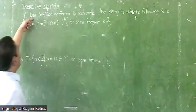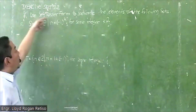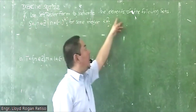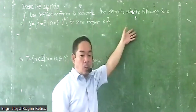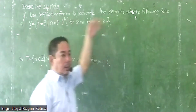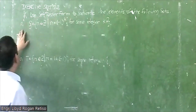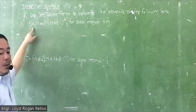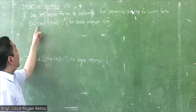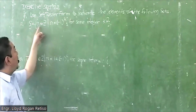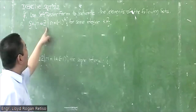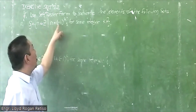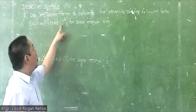we have: use set roster form to indicate the elements of the following sets. Okay, so for letter A, S is equal to the set of all n elements of ℤ such that n is equal to negative one